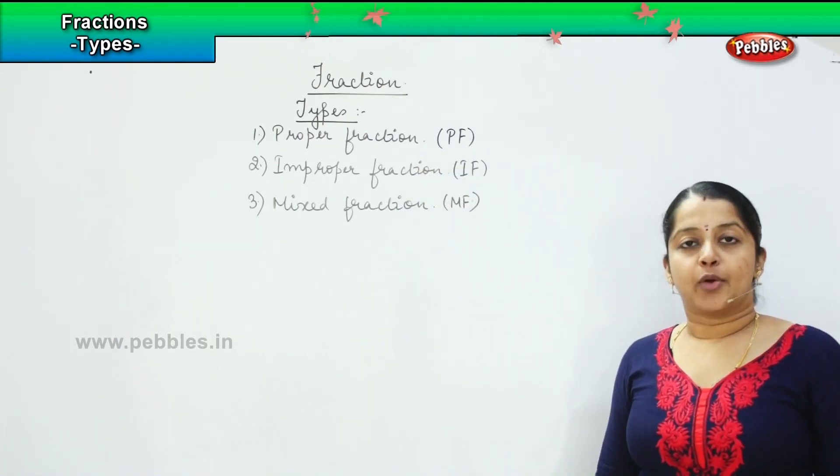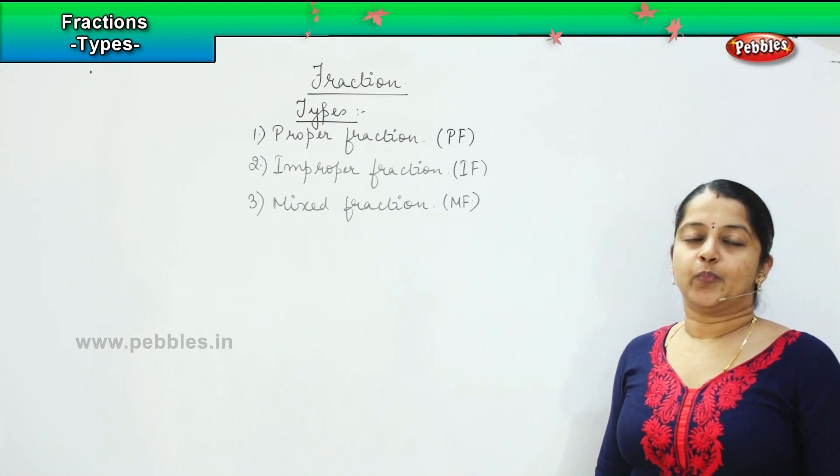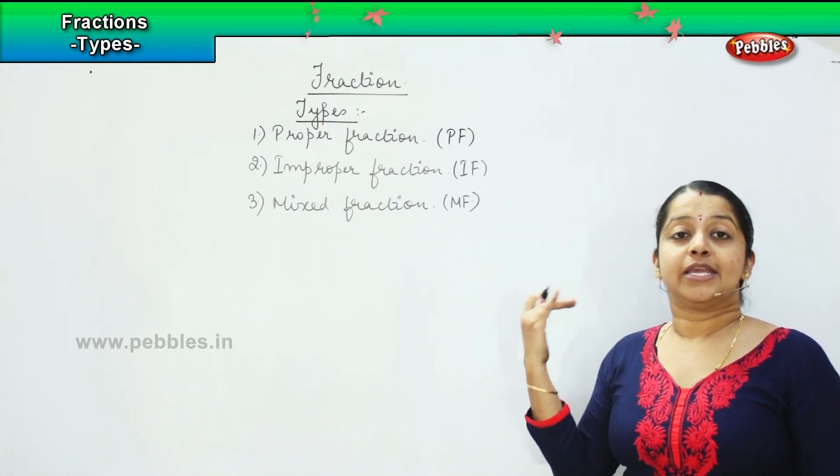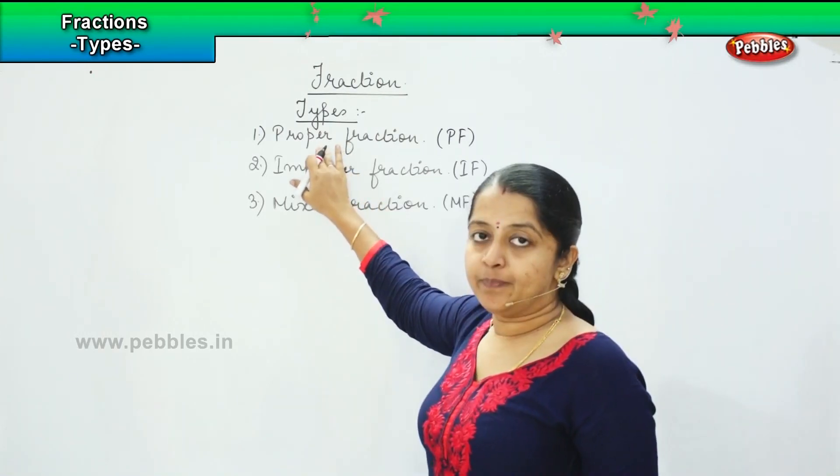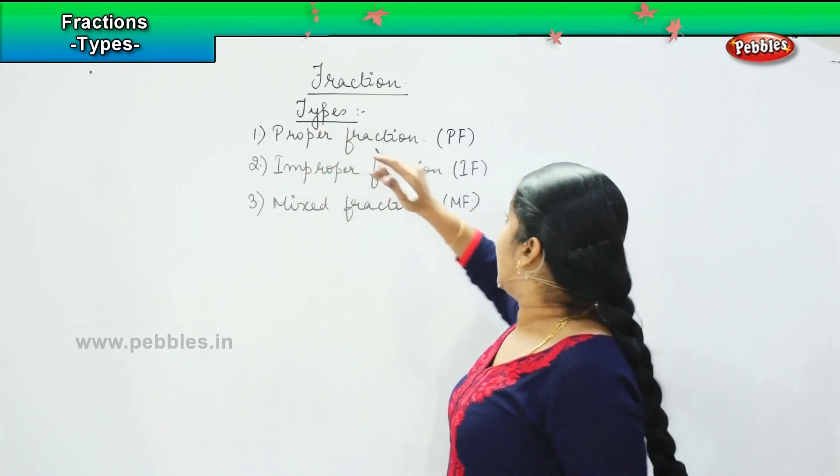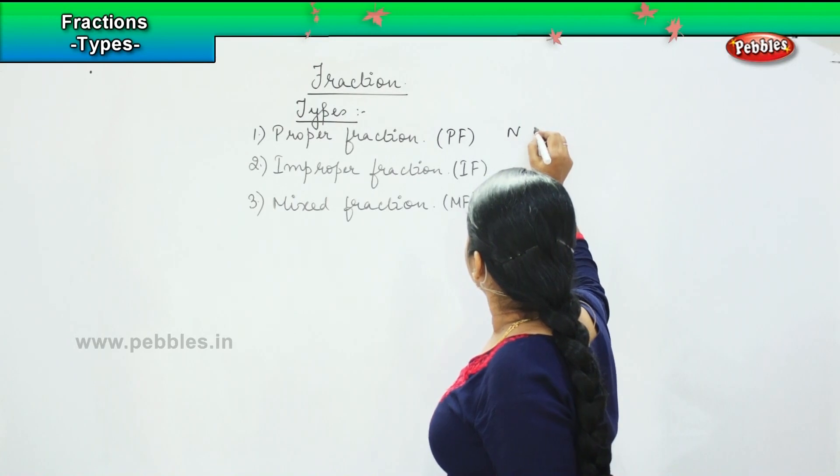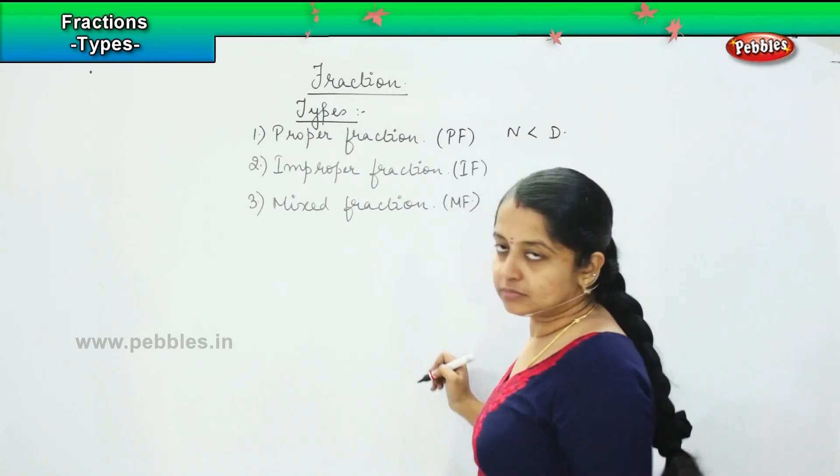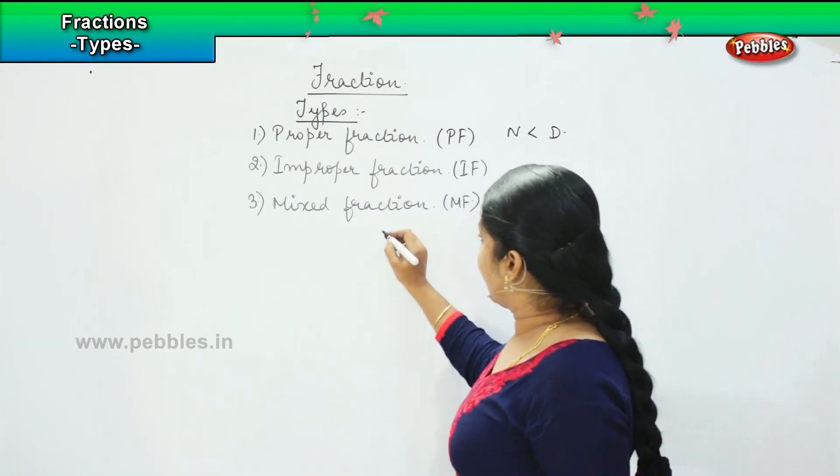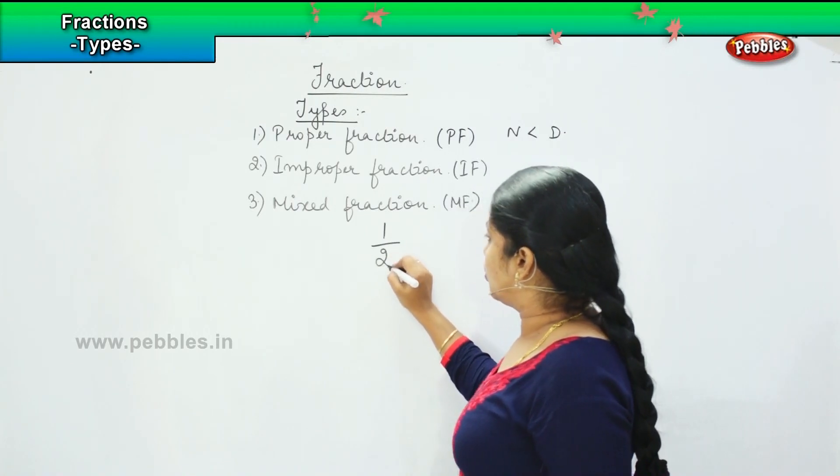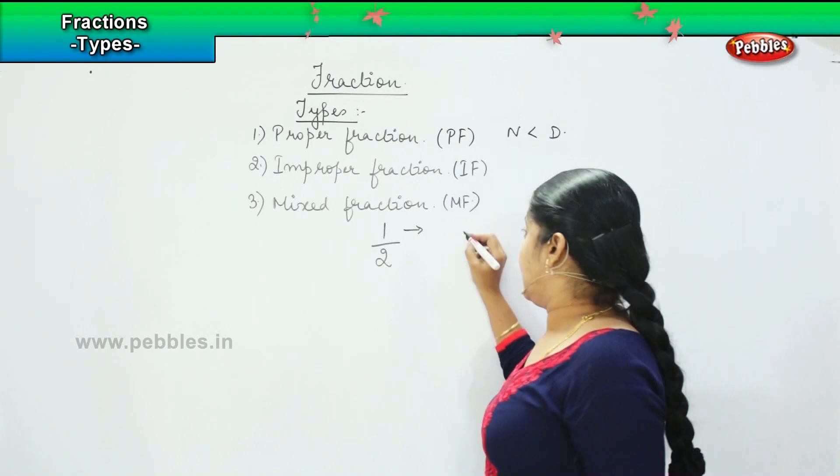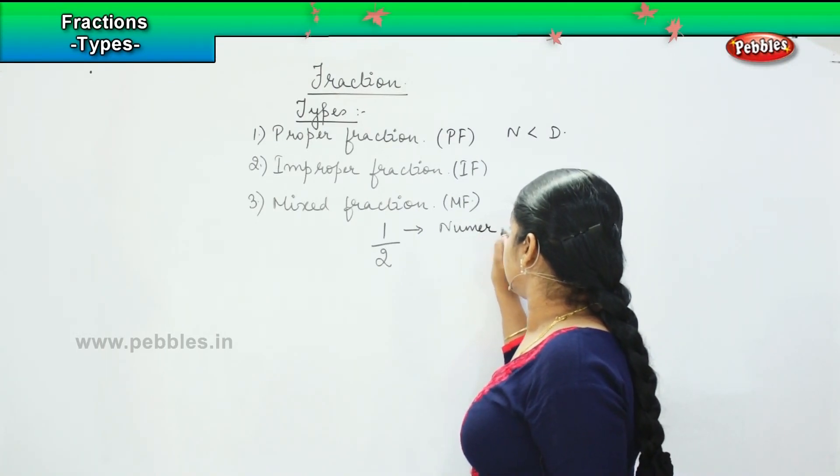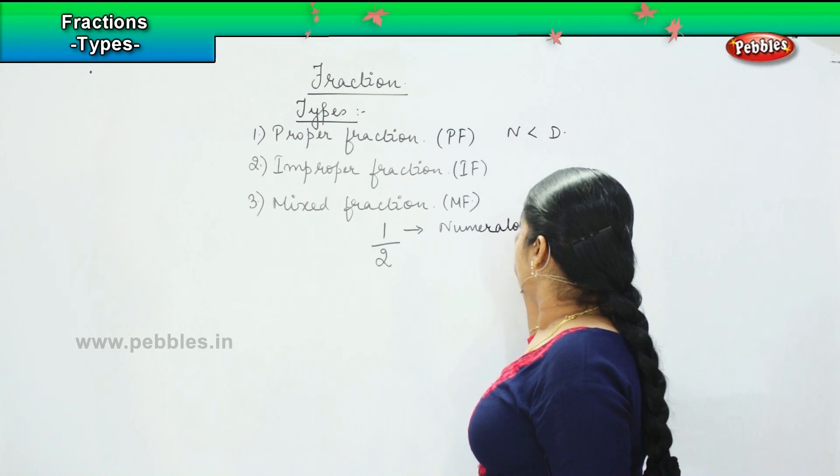Coming to the proper fraction, proper fraction is a concept where the number is equally divisible. At the same time, the numerator is lesser than the denominator. Now, in fraction, if I write 1 by 2, the number which is above the bar line is called as numerator.